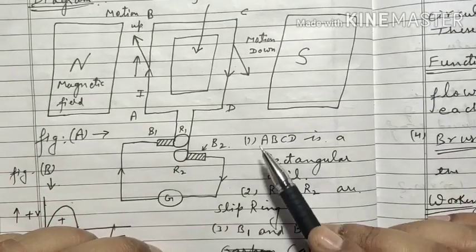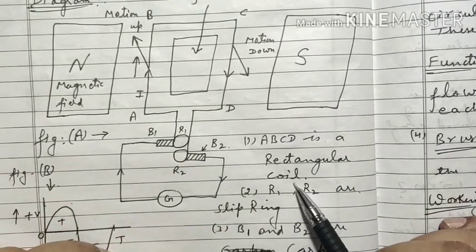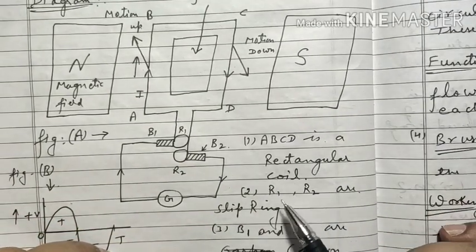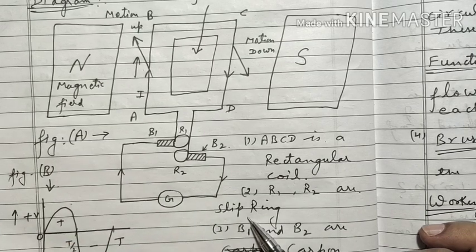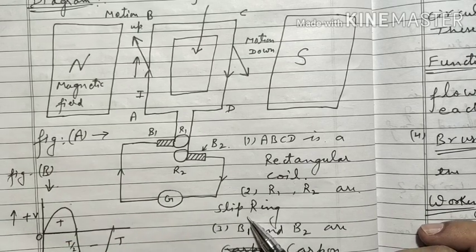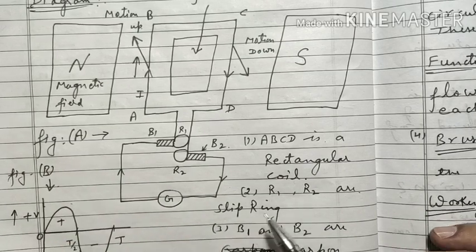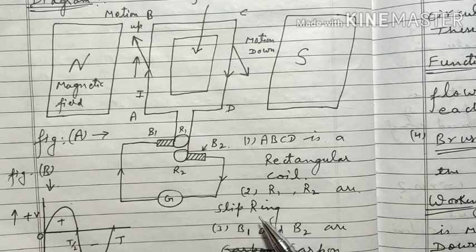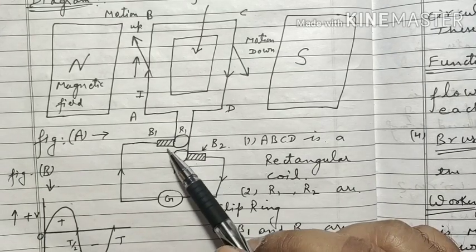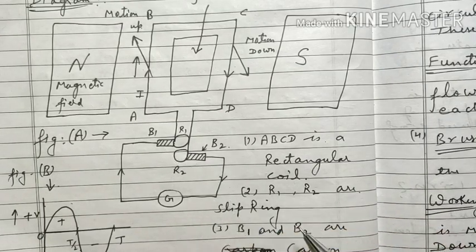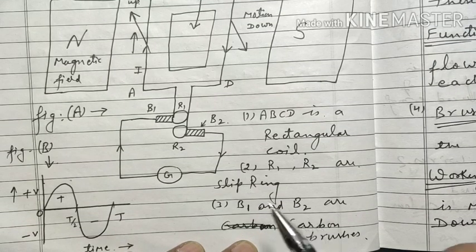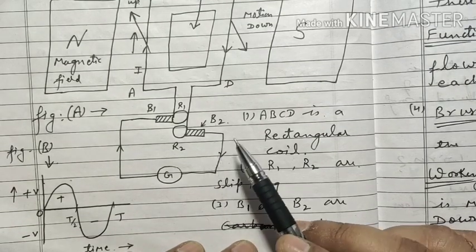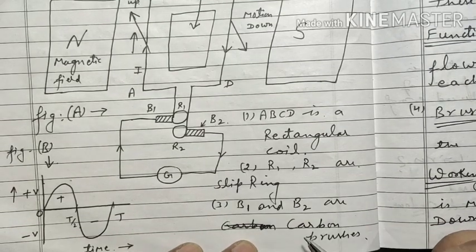ABCD is a rectangular coil. R1 and R2 are the slip rings, which give continuous contact with brushes B1 and B2. B1 and B2 are the carbon brushes.